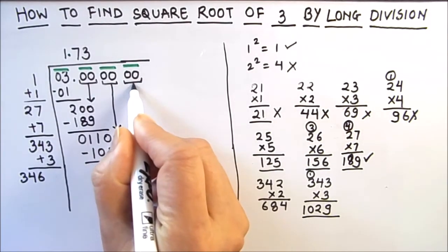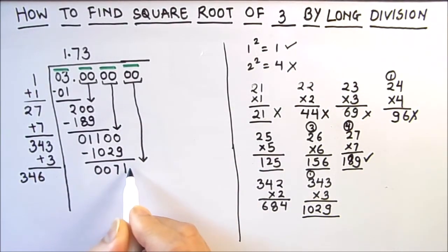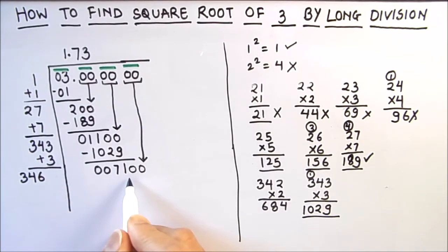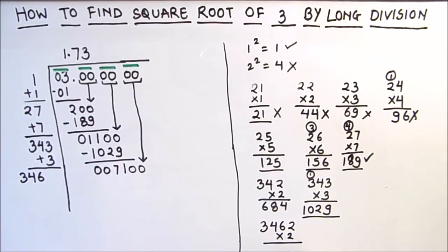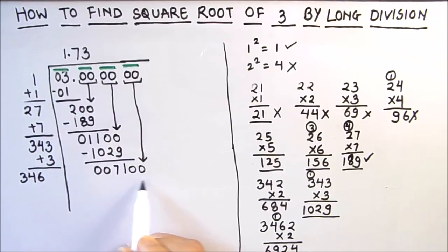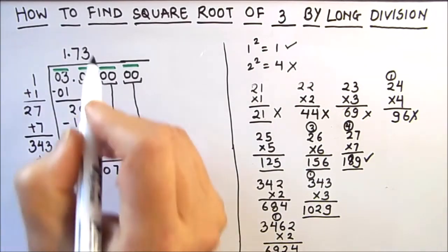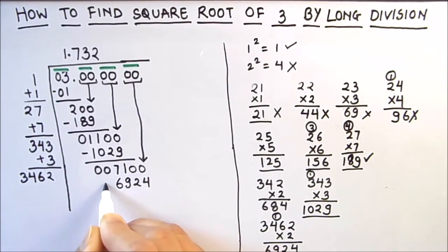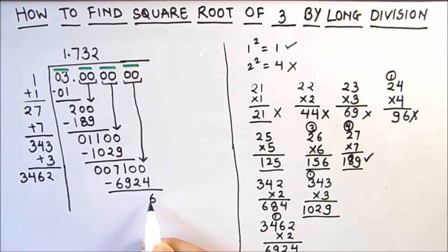We drop down the next pair of zeros, making our new dividend 7100. We test: 3462 times 2 — 2 times 2 is 4, 2 times 6 is 12 carry 1, 2 times 4 is 8 plus 1 is 9, 2 times 3 is 6 — giving 6924, just less than 7100. Taking 3 would give a number much larger than 7100. So we annex 2, our quotient digit is 2, and we subtract 6924 from 7100: 10 minus 4 is 6, 9 minus 2 is 7, 10 minus 9 is 1, leaving remainder 176.